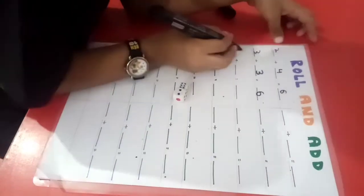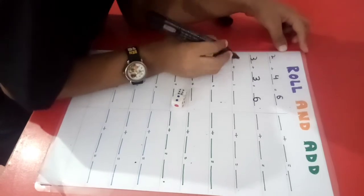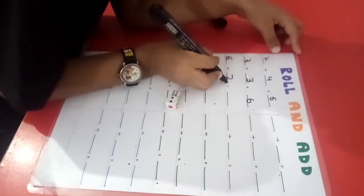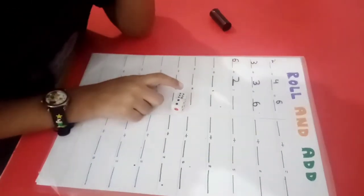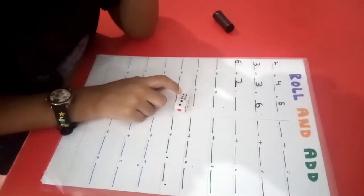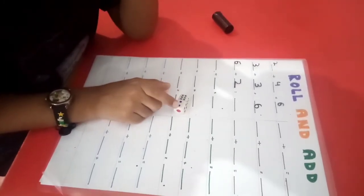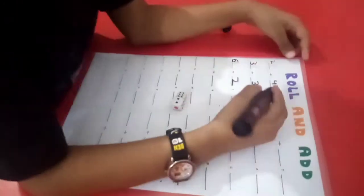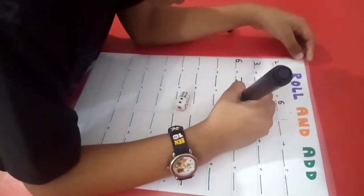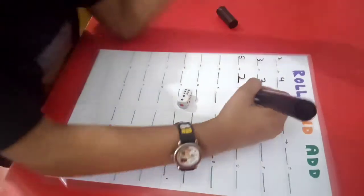Now how many total? 1, 2, 3, 1, 2, 3, 4, 5, 6, 8. It is the answer. 8. Now roll the dice again.